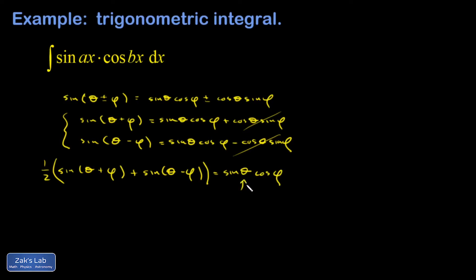So here my theta is going to be ax and my phi is going to be bx. And I can rewrite my integral as a one-half sine theta plus phi. So that's ax plus bx, so that's a plus b times x. And then sine of theta minus phi. So that's going to be a minus b times x.